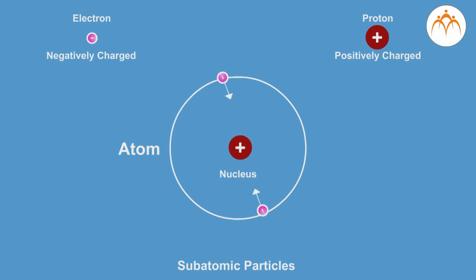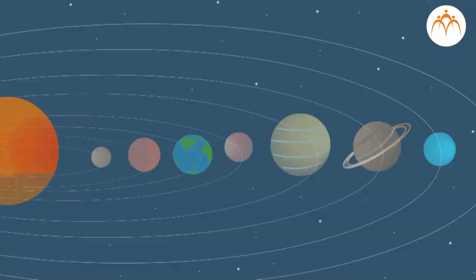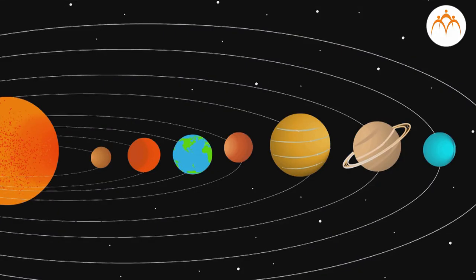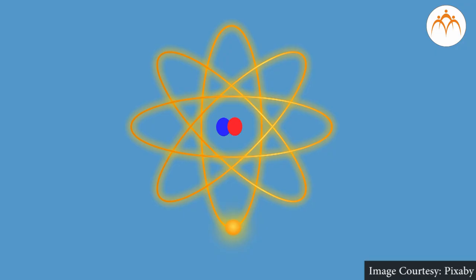There is a lot of empty space between the revolving electrons and the atomic nucleus. As this was closer to our solar system with sun as nucleus, this Rutherford's model is also called planetary model.